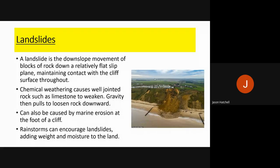Landslides are the downslope movement of blocks of rock down a hill, even on relatively flat slopes, where all material maintains contact with the ground at all times — slowly creeping rather than falling dramatically. Chemical weathering, freeze-thaw, and marine erosion at the foot of a cliff can all cause landslides. Heavy rain and rainstorms also encourage landslides by adding weight and moisture to the land.